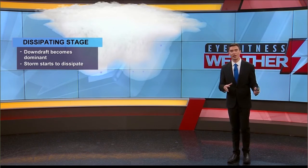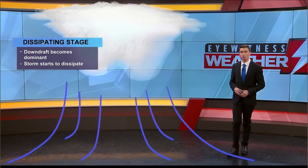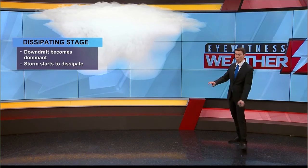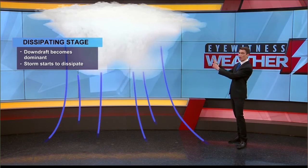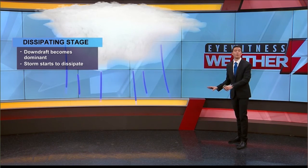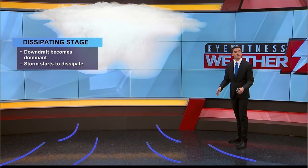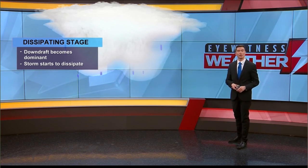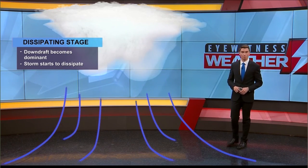This is oftentimes the dissipating stage of a thunderstorm. We don't get that warm moist air rising — we see that downdraft becoming more dominant, and this helps to dissipate a thunderstorm.